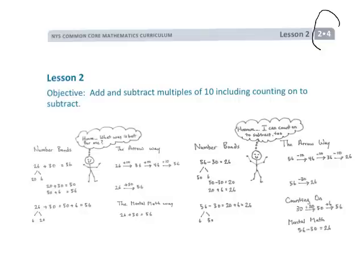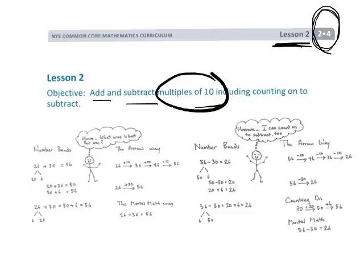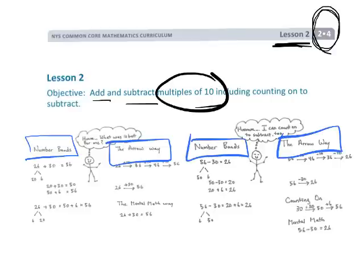This is second grade module 4 lesson 2, where we're going to continue adding and subtracting using multiples of 10 and place value. We'll continue practicing what we began in our previous lesson using number bonds and the arrow way. This is not the standard algorithm yet — we're trying to get kids to understand number sense and how to get the answer without it, because doing so means they're truly developing that number sense.